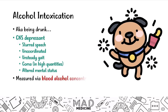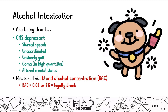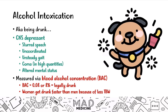Alcohol is measured in the blood via blood alcohol concentration, or BAC. A BAC of 0.08 means you are legally drunk — anything greater means you are drunk, and you cannot drive. Women get drunk faster than men simply because they have less total body water. So for a woman, three drinks might get her legally drunk, whereas for a male it may take four or five.